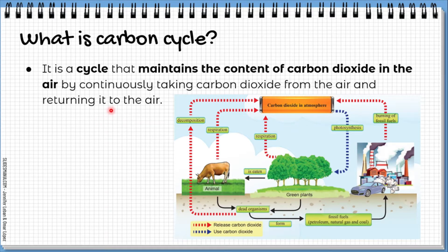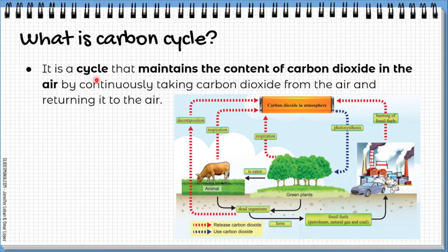So what is the carbon cycle? The carbon cycle is a cycle — kitaran — that maintains the content of carbon dioxide in the air by continuously taking carbon dioxide from the air and returning it to the air. So carbon cycle ini adalah satu kitaran yang berterusan, di mana you take carbon dioxide from the atmosphere, you use it, and then you return it back to the atmosphere.